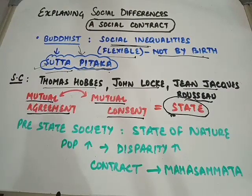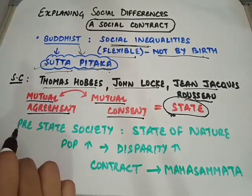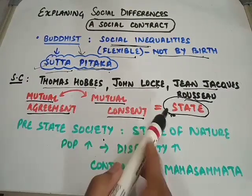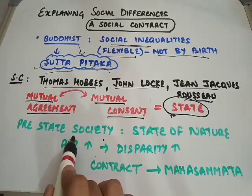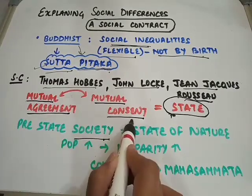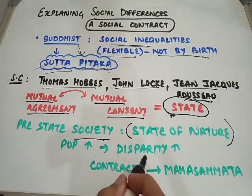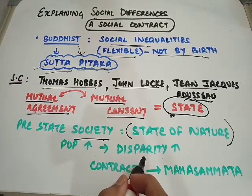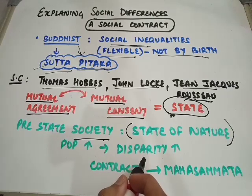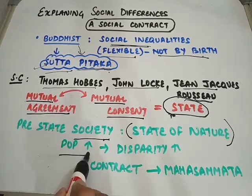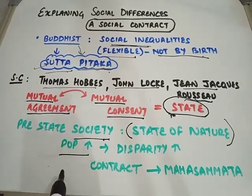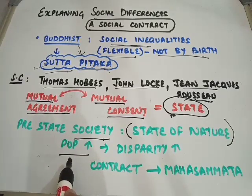According to this theory, the pre-state society — that is, society before the state came into existence — is called the state of nature. The state of nature is considered an ideal state: everyone is happy, everyone is living a life of bliss, and there is no problem at all. However, with the rise of population, problems started emerging.